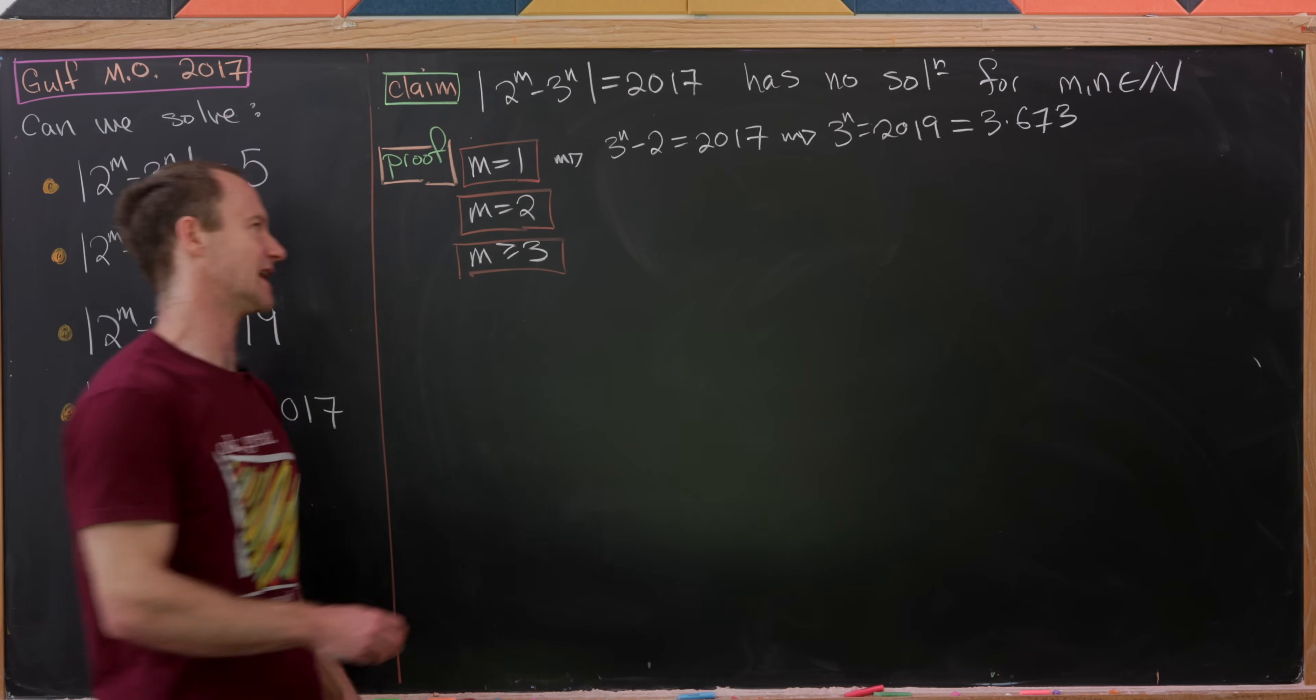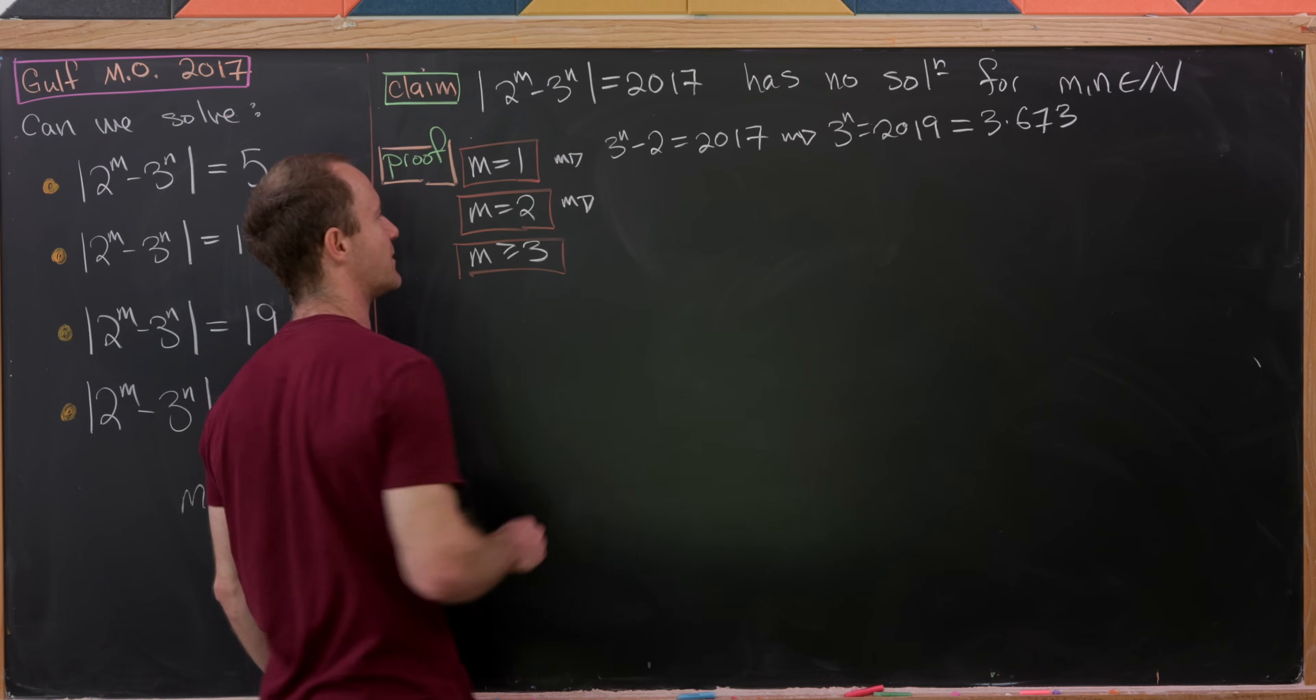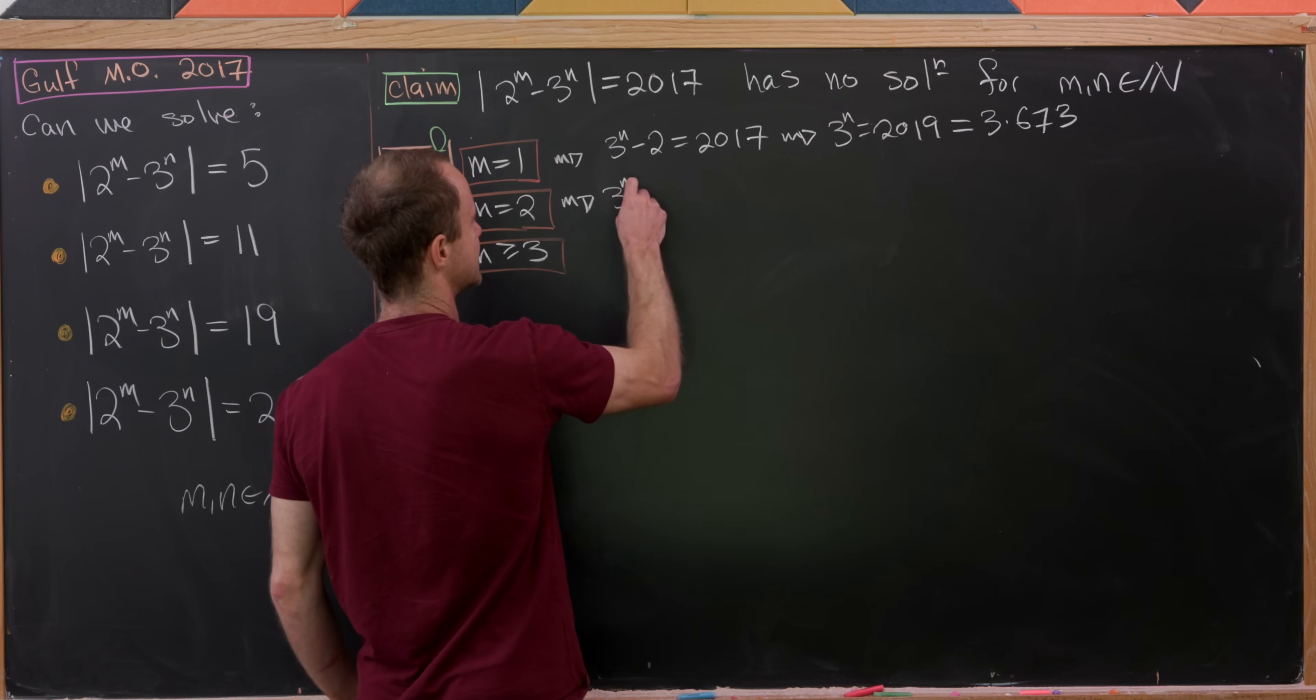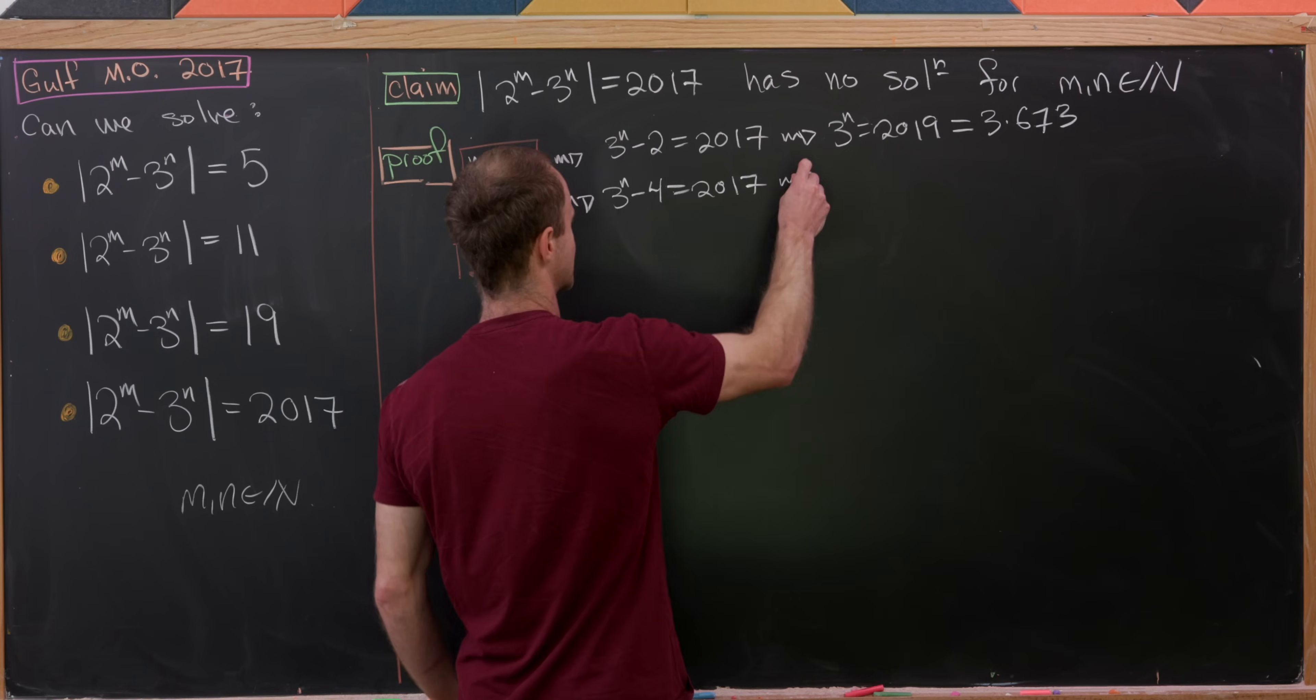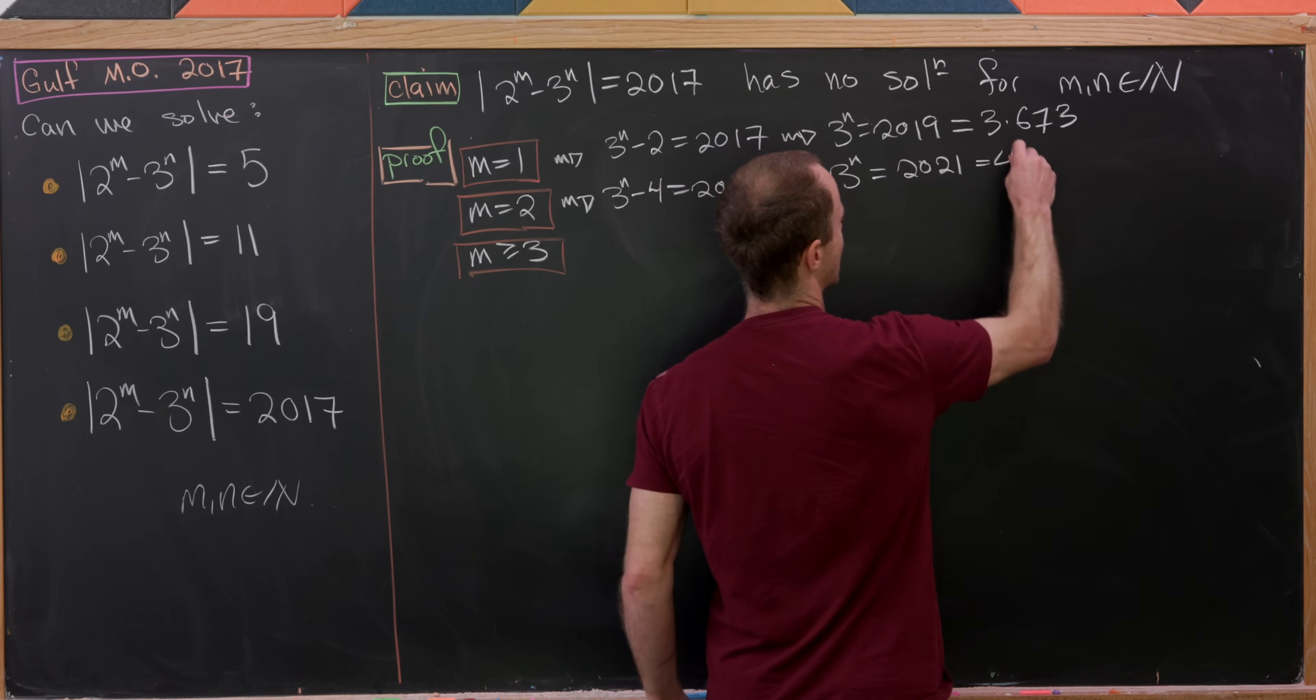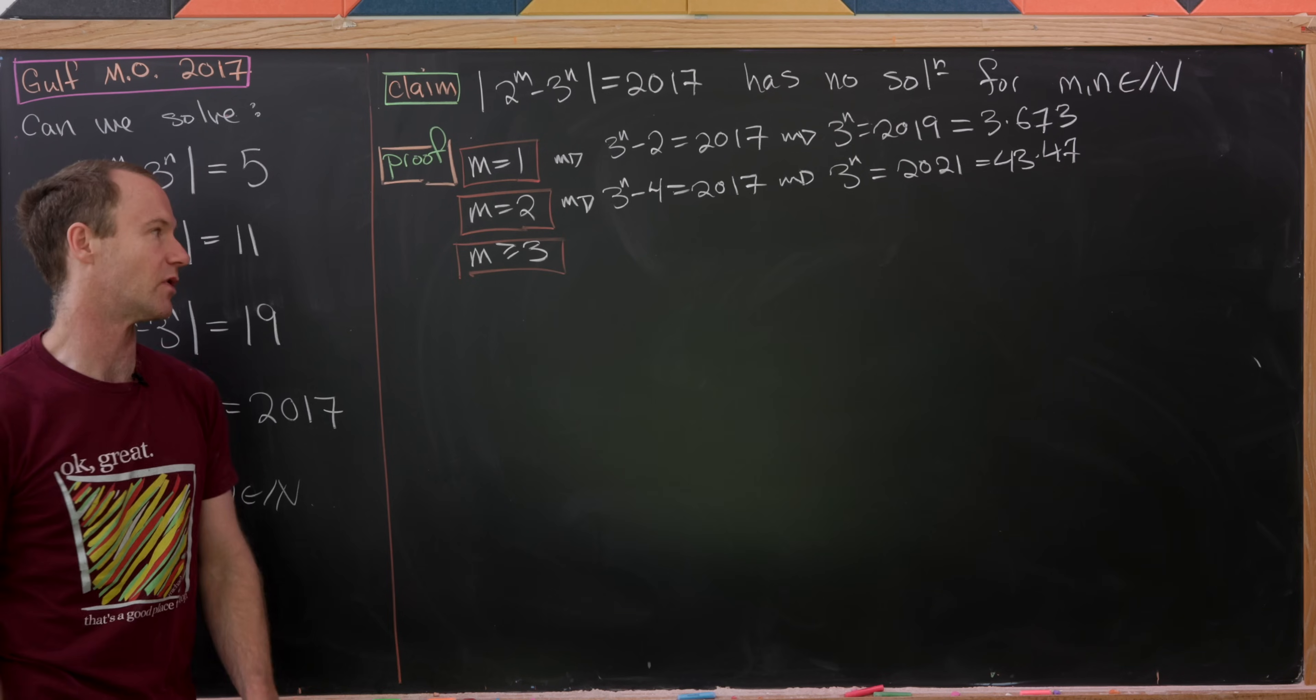So now moving on to this next one when m is equal to 2. Again we'll need the power of 3 to be larger in this case otherwise there's maybe clearly not a solution. So we'll have 3 to the n minus 4 is equal to 2017 which leads us to see that 3 to the n must be equal to 2021 which factors as 43 times 47. Again clearly not a multiple of 3.